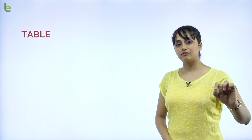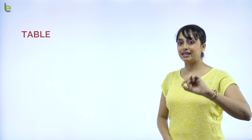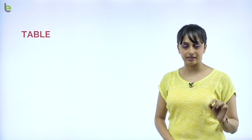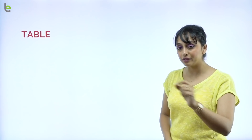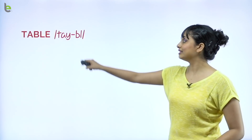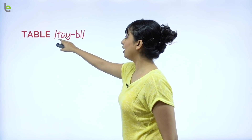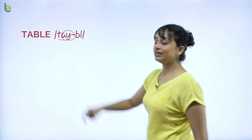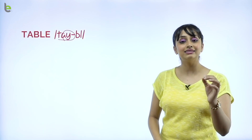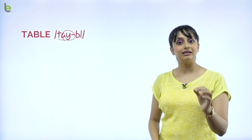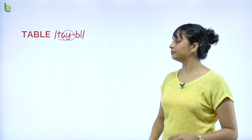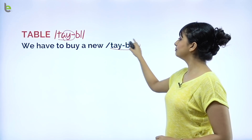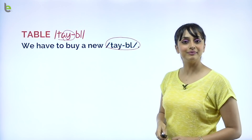Many times this word gets mispronounced. The correct pronunciation is 'table.' Notice the 'ay' sound. Table. Table. For example: We have to buy a new table.